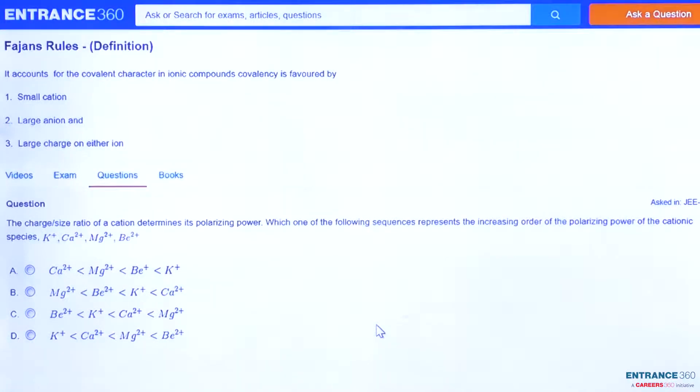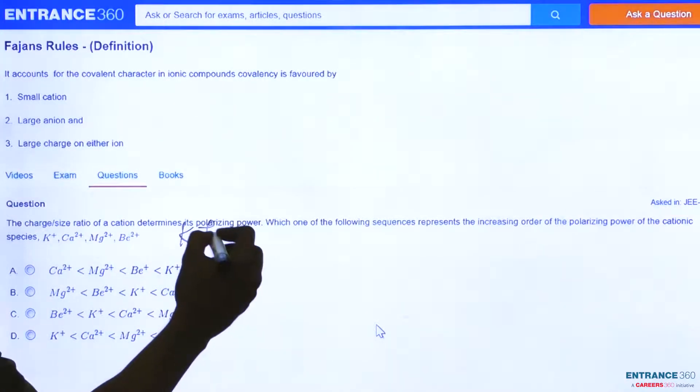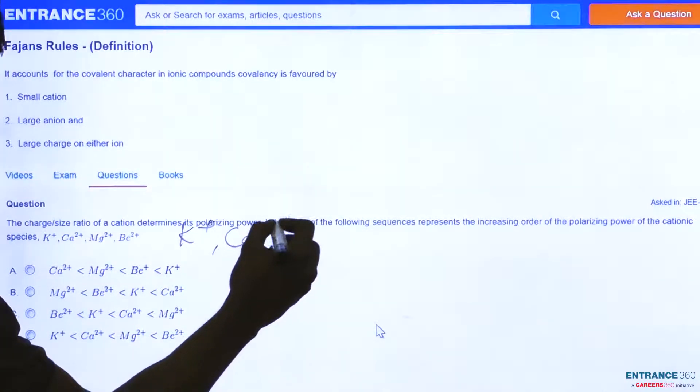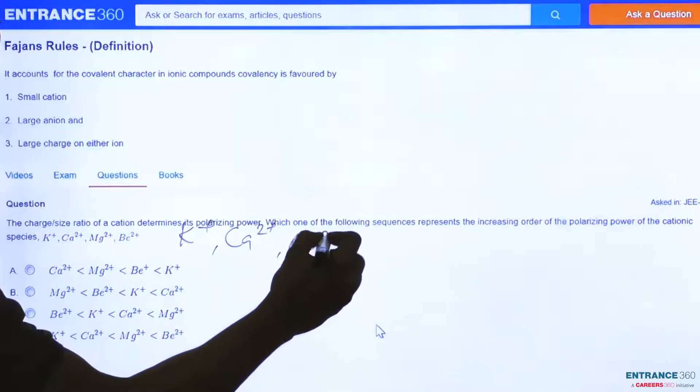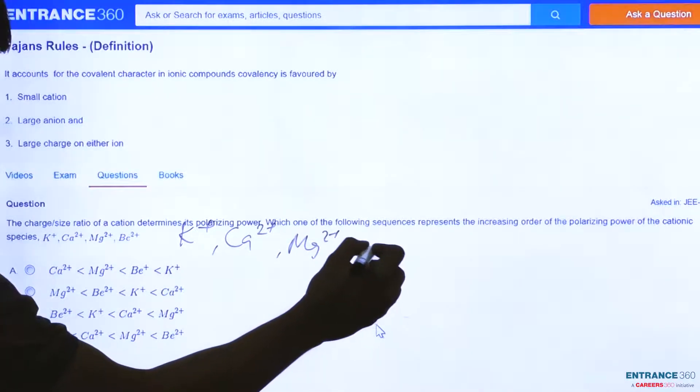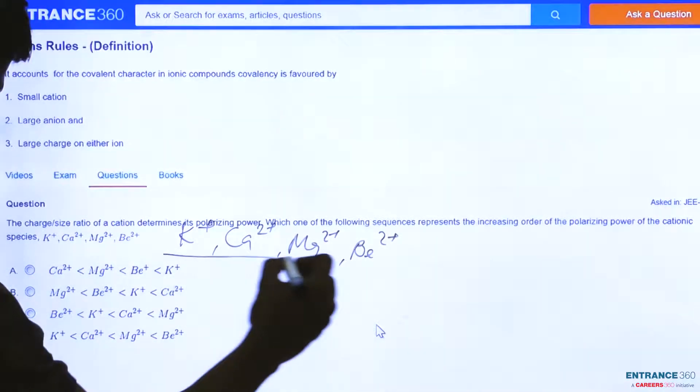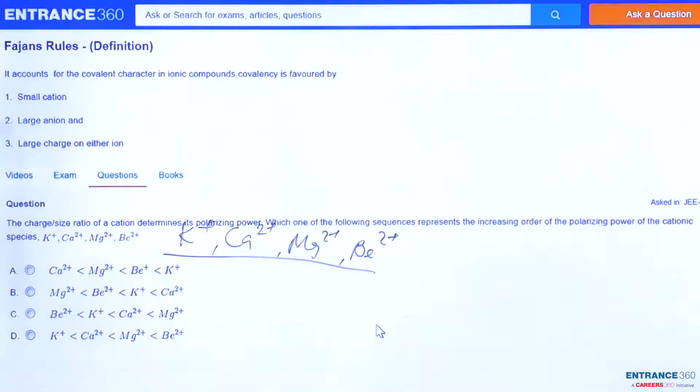These species are K+, Ca2+, Mg2+, and Be2+. So we have in total five species and we have to find its order of polarizing power. In order to solve this question, we will find what is the concept behind this question. So let's proceed to the concept.